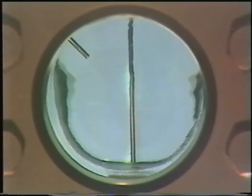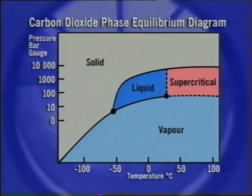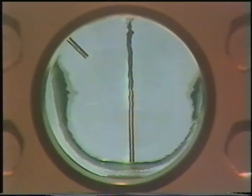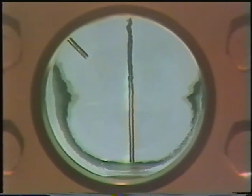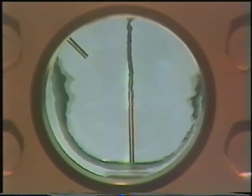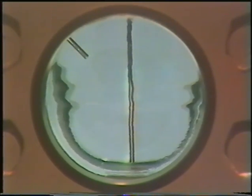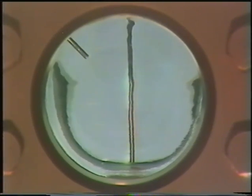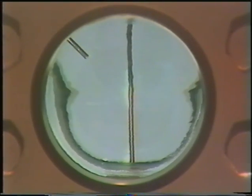After a small further increase in temperature, all the CO2 present in the cell is now in the supercritical phase. This supercritical CO2 has some interesting and useful properties. Its high density gives it some of the properties of a liquid, so for example it can act as a solvent for extracting various materials.